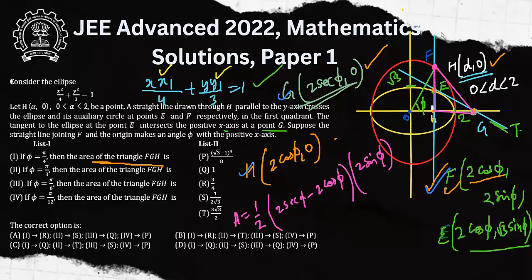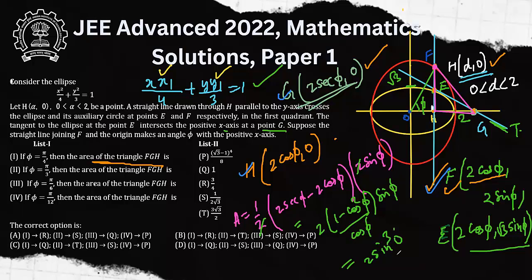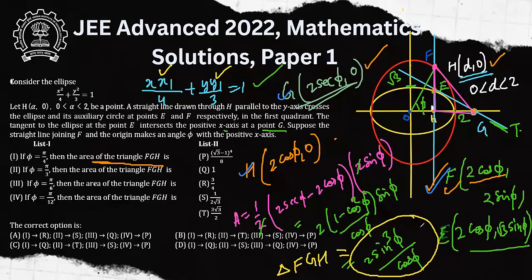Simplifying: the area becomes (1 − cos²φ)/cos φ × sin φ, which reduces to 2 sin φ · tan φ — expressed as sin²φ/cos φ scaled appropriately. This is the area of triangle FGH in terms of φ.